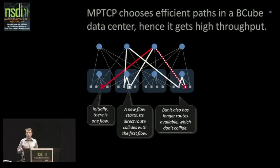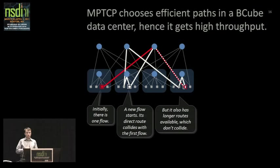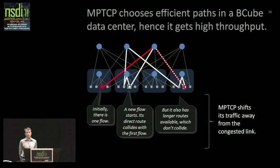Here's a tangible example — the B-cube data center I discussed at the beginning. We started with the red flow, then a new white flow started. The white flow has a choice of several paths. What our MPTCP algorithm does is follow that theoretical recommendation: it looks at congestion on each path, and the path colliding with the red flow is more congested, so our MPTCP algorithm simply shifts its traffic away from the congested path, avoiding collisions in that way.